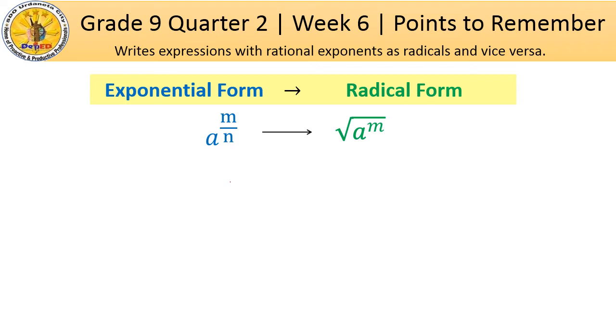So, kung napapansin nyo, ang m sa radical form na ito, or the exponent of a, ay galing sa numerator ng ating exponential form. And then, the index n. Ito naman ay nagmula sa denominator ng exponential form. Also, maaari rin natin tawagin radical form ito.